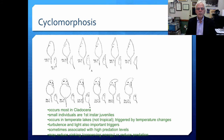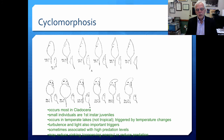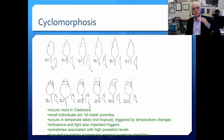Also, there is a phenomenon called cyclomorphosis. Some zooplankton, especially cladocera, actually change their body shape depending on the time of year, usually as a reaction we think to water temperature, and it may also be associated with high predation levels. Small individuals shown here are the first instar juveniles; here are the adults. It occurs in temperate lakes but not really in tropical areas. It seems to be triggered by temperature changes and maybe by turbulence, light, and high predation levels. You can see very remarkable changes in the carapace shape of these cladocera. Some people also think it might reduce sinking, because the more appendages sticking out, the more slowly you'll sink and the less energy needed to stay up in the water column.